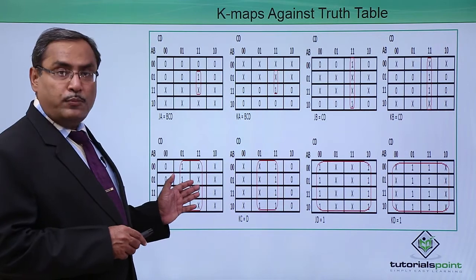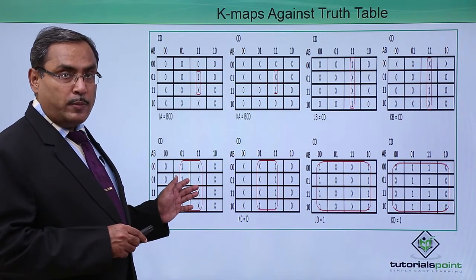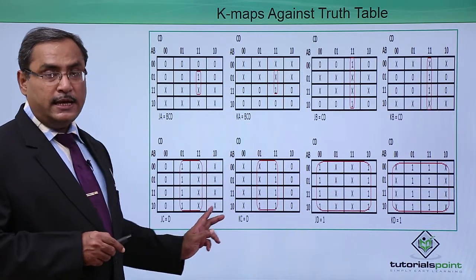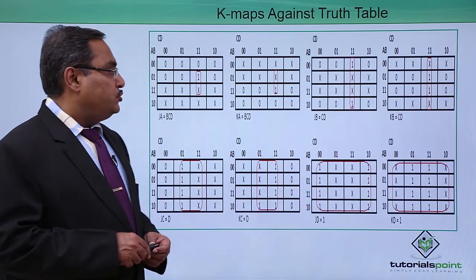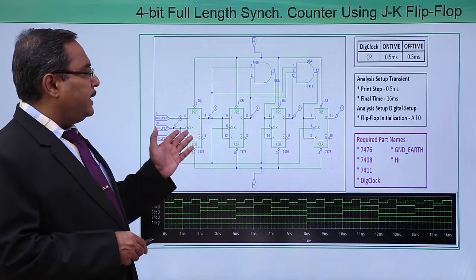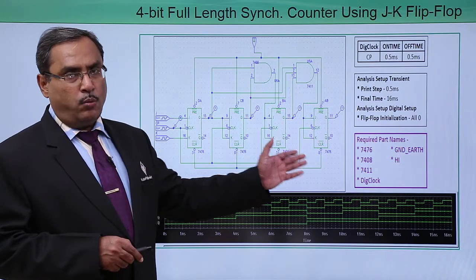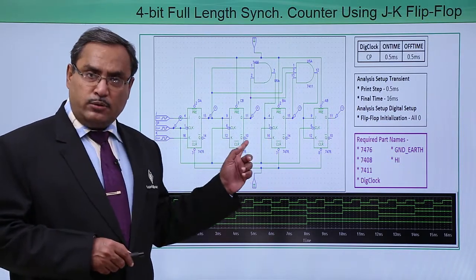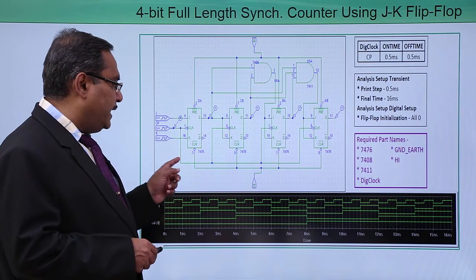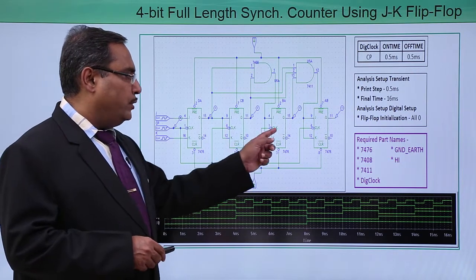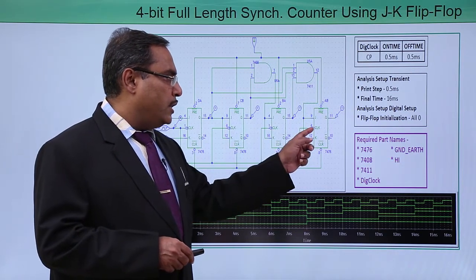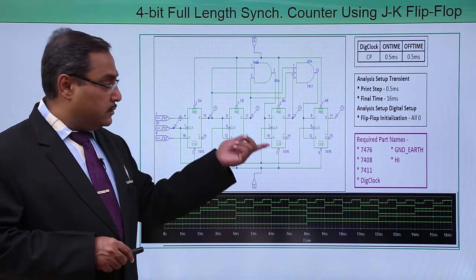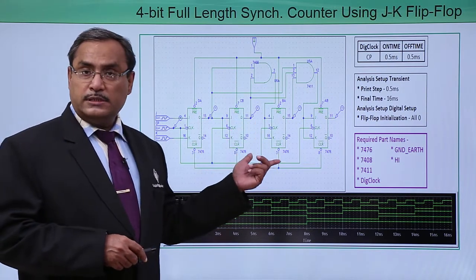We plotted 8 Karnaugh maps in total for JA, KA, JBKB, JCKC, and JDKD. Accordingly the circuit has been made — same as whatever the K-maps gave us. As it is a synchronous counter, all flip-flops get the clock pulse from the same source with the same frequency and time period, and the respective circuit has been built from those inputs.